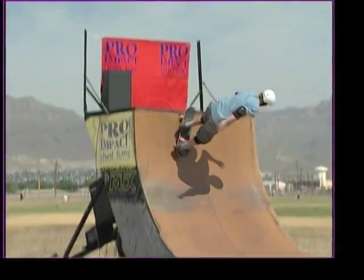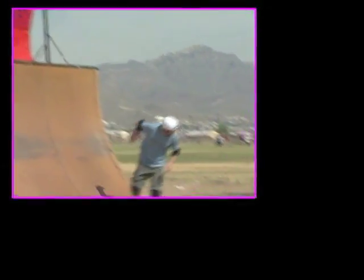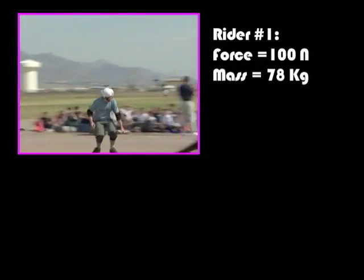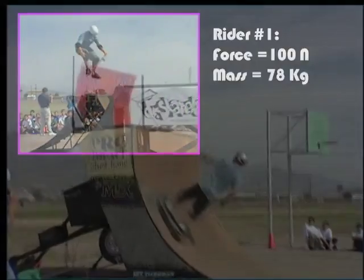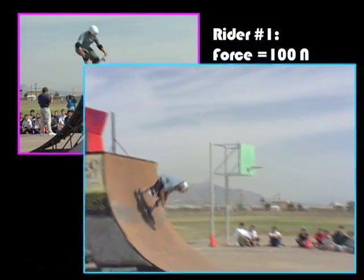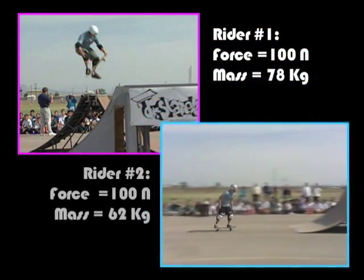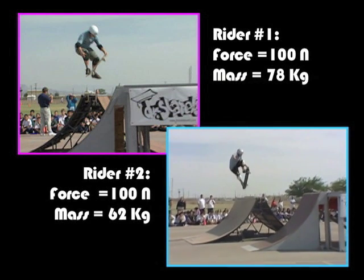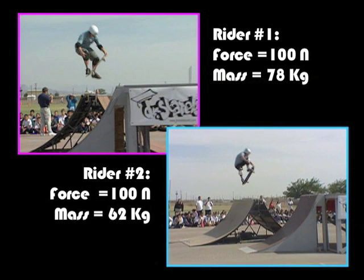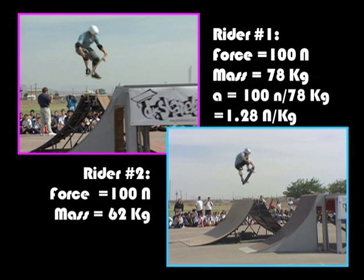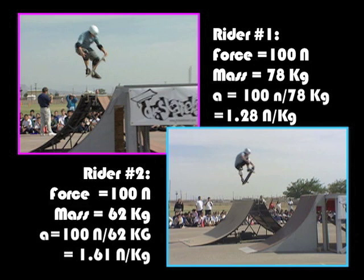For example, let's say the first rider has a force of 100 Newtons and a mass of 78 kilograms, while the second rider has a force of 100 Newtons and a mass of 62 kilograms. Who has the greater acceleration? Doing the math for the equation, you can calculate that rider one has acceleration equal to 1.28 Newtons per kilogram, while rider two has acceleration equal to 1.61 Newtons per kilogram. So rider two has the greater acceleration.